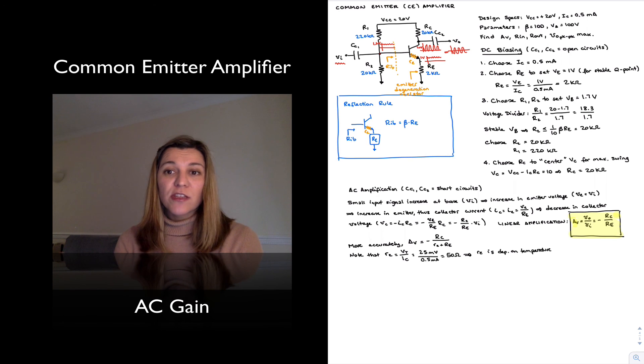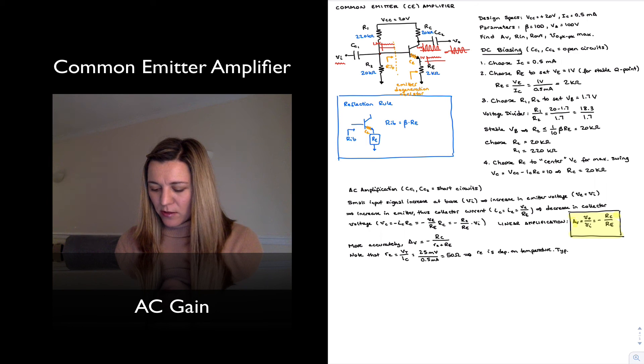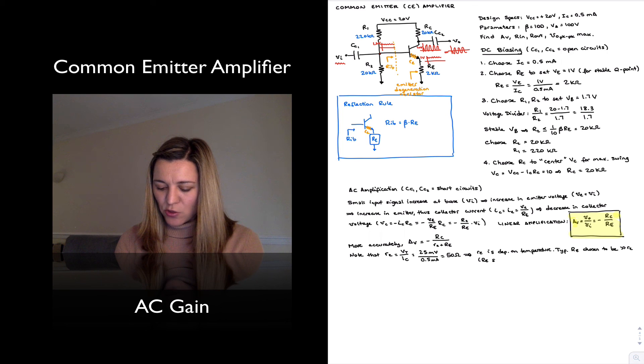And typically, we choose capital RE to be much larger than little re. And that's, we say, so that it will swamp little re. So typically, RE is chosen to be much larger than little re. We say RE swamps little re.